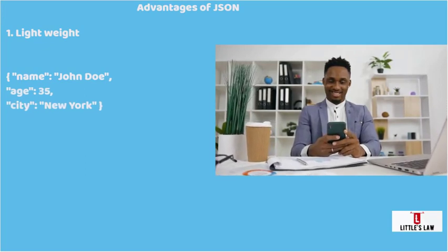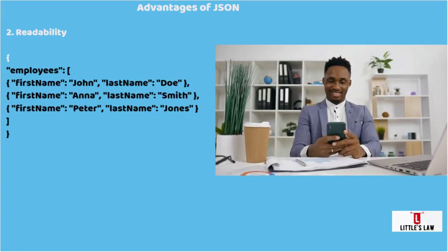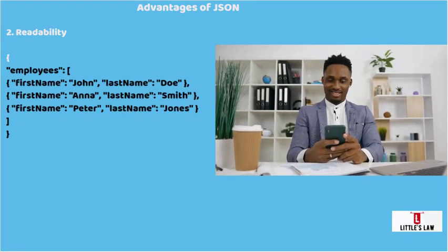The first advantage of JSON is that it is lightweight. For example, a JSON structure representing a person's name, age, and city can be transmitted and parsed quickly and efficiently, making it ideal for use in web applications. The second advantage is readability — the readable syntax of JSON makes it easy to understand and work with data, even for developers who are new to the format.